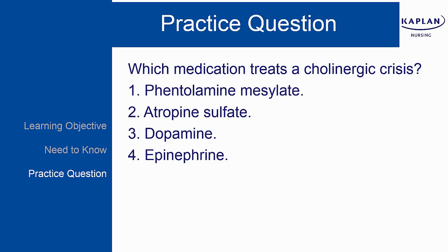Here is your practice question: Which medication treats a cholinergic crisis? Number one, phentolamine mesylate. Number two, atropine sulfate. Number three, dopamine. Number four, epinephrine. Take a moment and then select your answer.